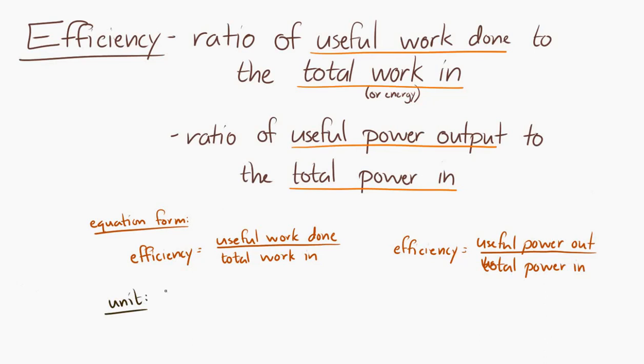And we can also determine what the units are of this efficiency thing that we've just defined. Well, the units of efficiency would be either joules divided by joules, if we're using the work equation, or watts divided by watts, if we're using the power equation. Either way, the units cancel out. Efficiency has no units. It's also a scalar.